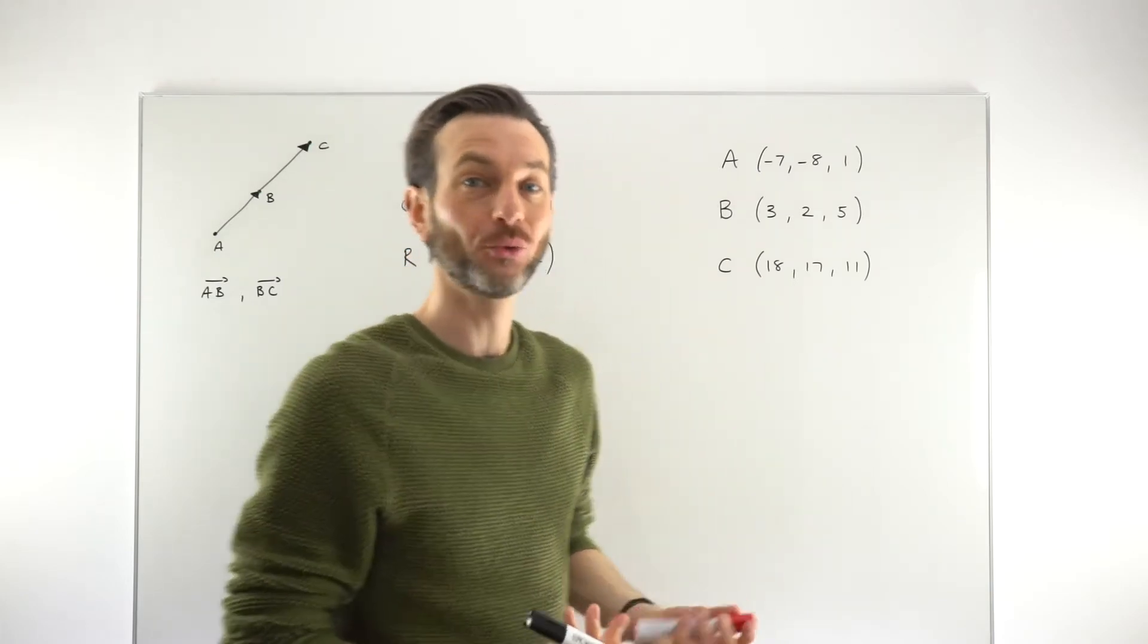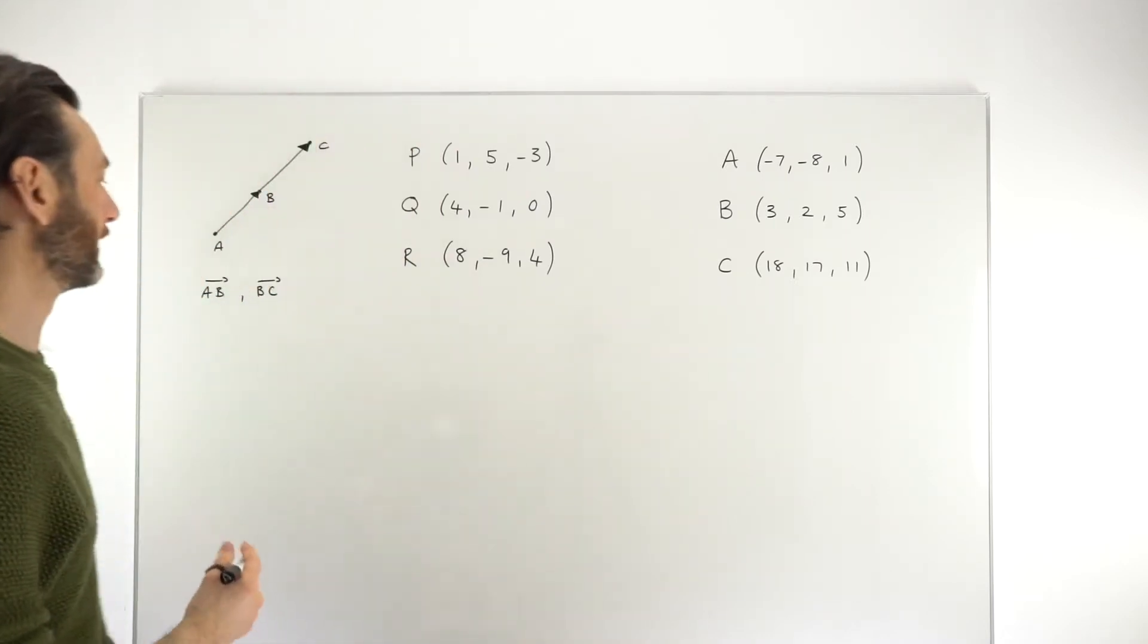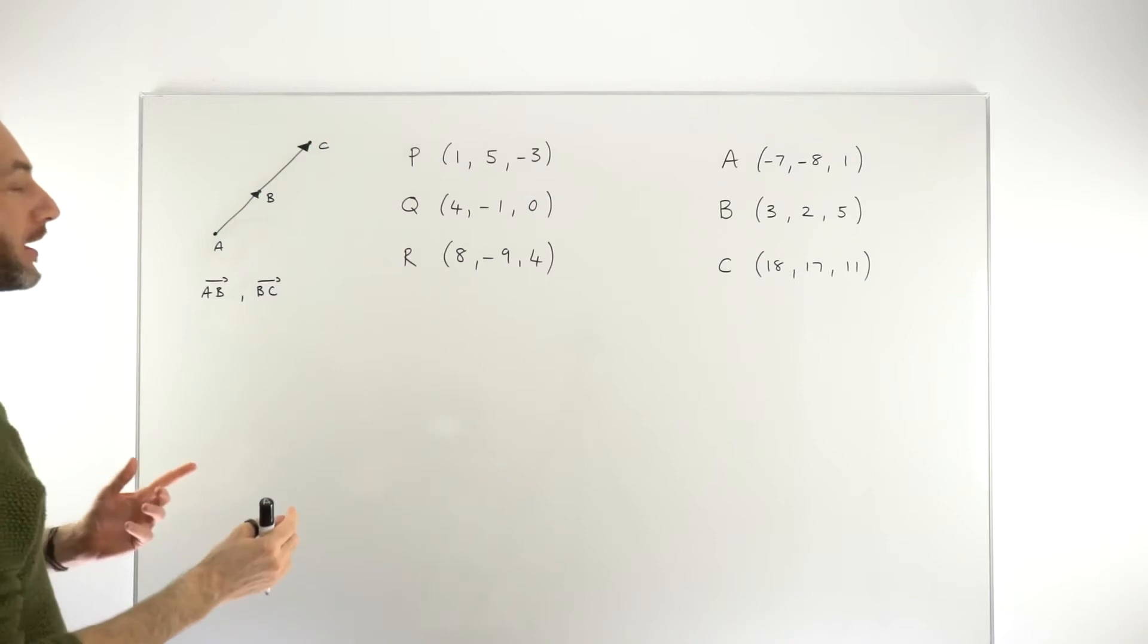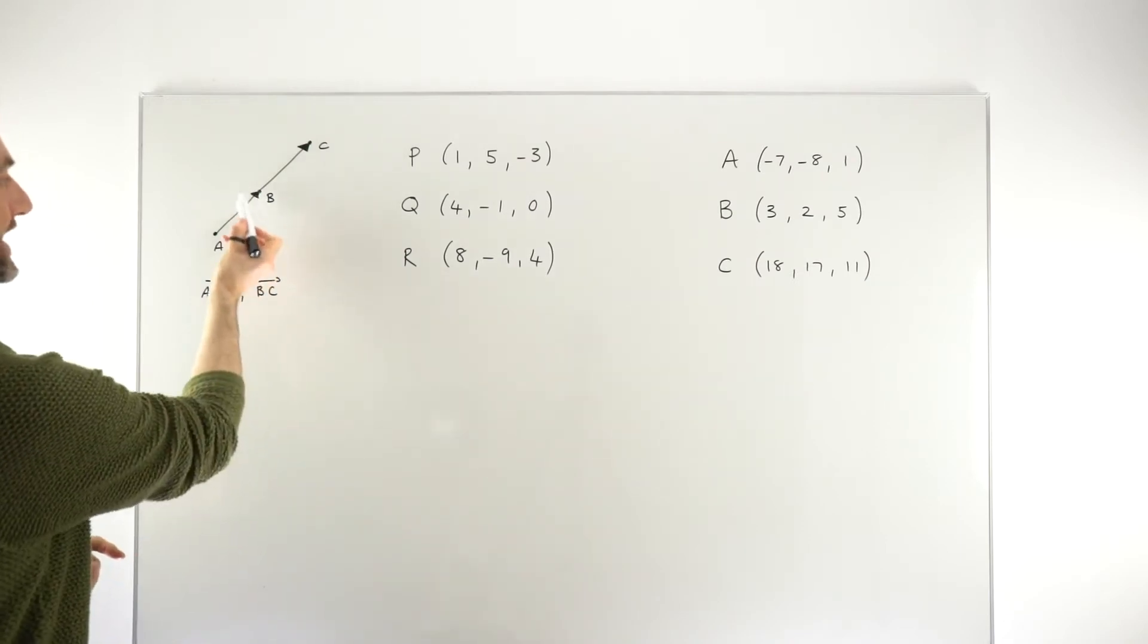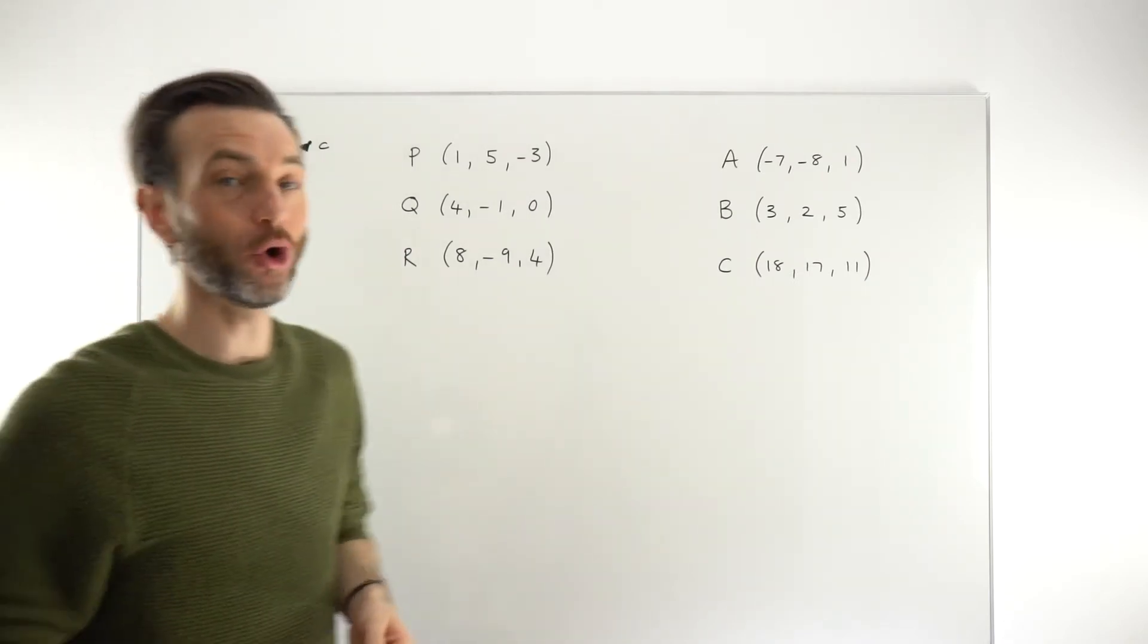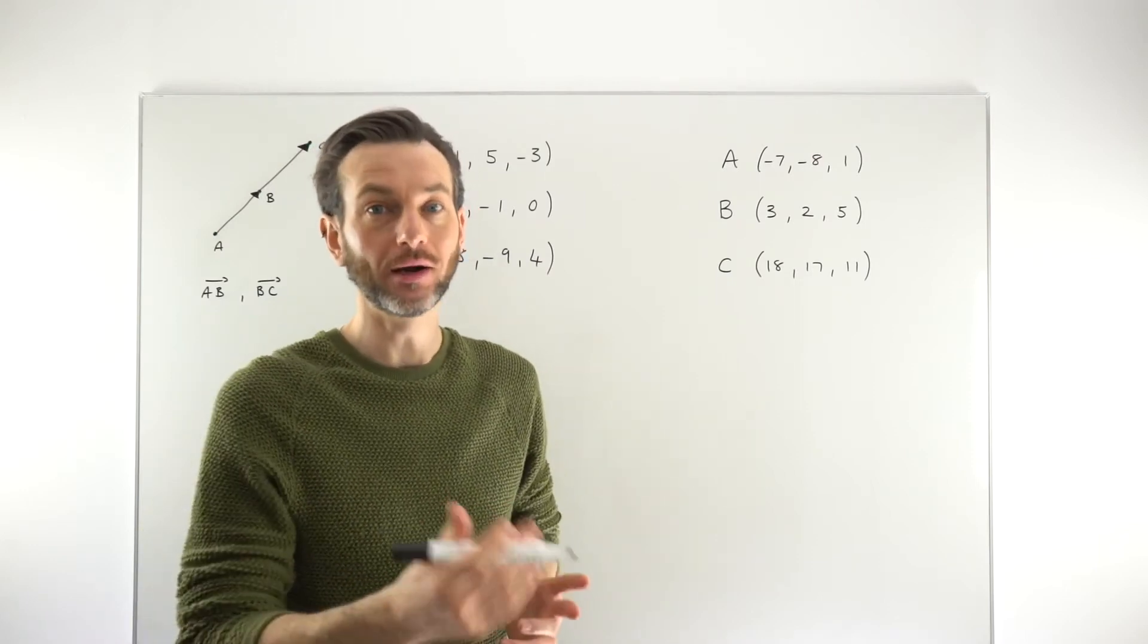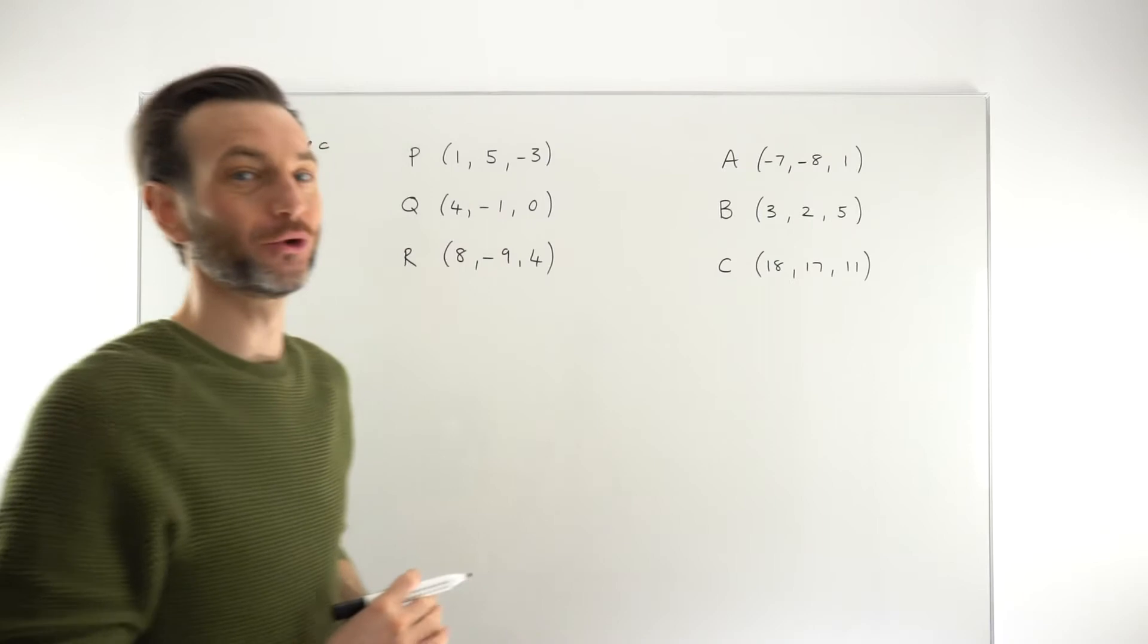So we've broken this problem down into really constructing our vectors, showing that these two vectors are parallel, and then just stating that B, or whatever the letter is, is a common point. Parallel alone is not good enough to show they're collinear. Parallel plus the common point is good enough.